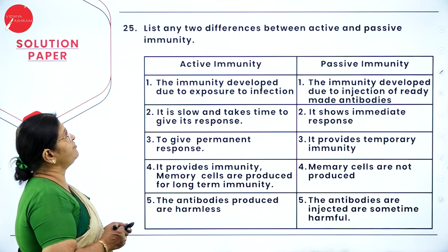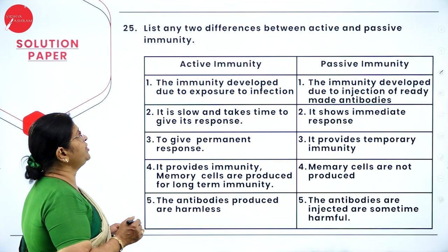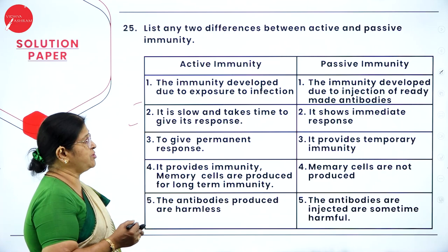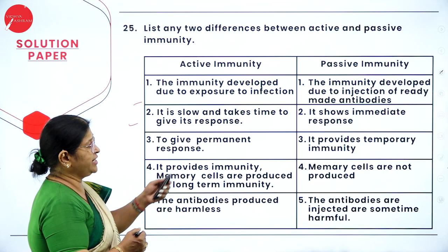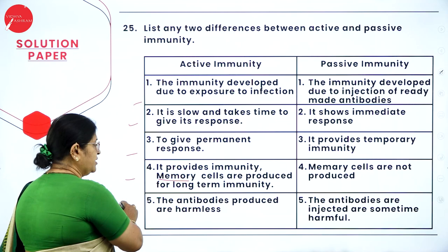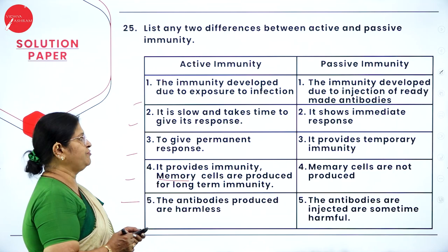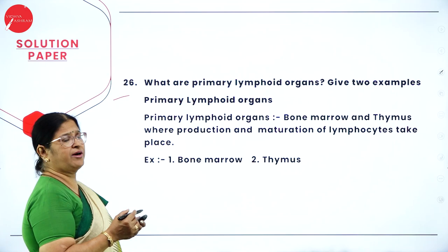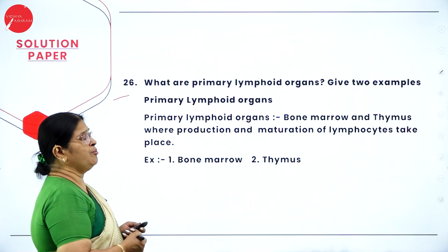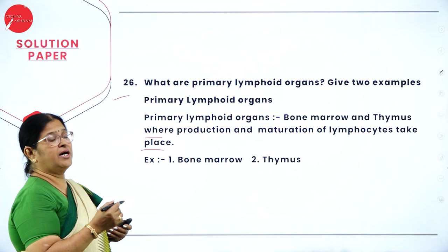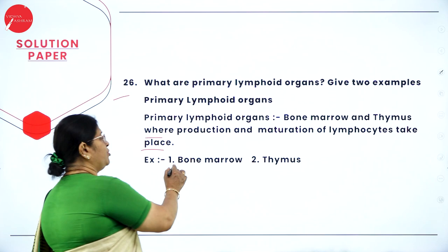Question 25: differences between active and passive immunity — active immunity develops due to exposure to infection, is slow, provides long-term immunity, and produces memory cells. Passive immunity develops due to injection of ready-made antibodies, shows immediate response, provides temporary immunity, and memory cells are not produced. Injected antibodies are sometimes harmful. Question 26: primary lymphoid organs are where production and maturation of lymphocytes take place — examples are bone marrow and thymus. T lymphocytes are produced in bone marrow and mature in thymus.